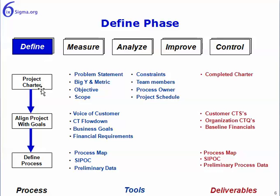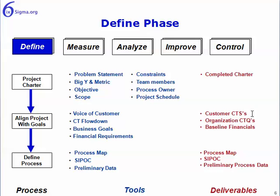Looking at the Define phase, these are the three high-level activities. In this portion of the slide we have the process — three steps in the Define phase — and then the tools you might expect to use in creating a project charter, aligning the project with organizational goals, and defining the process. Then the deliverable: the project charter or completed project contract. In aligning with goals, we want customer critical-to-satisfaction, organizational critical-to-quality, or baseline financials. In defining the process, we want a process map, maybe a SIPOC, and some preliminary process data.